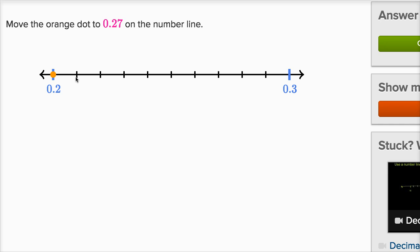So each of these is a tenth of a tenth, which is a hundredth. So this is two tenths and zero hundredths, two tenths and one hundredths, two tenths and two hundredths, two tenths and three hundredths, two tenths and four hundredths, two tenths and five hundredths, two tenths and six hundredths, two tenths and seven hundredths. This is two tenths and seven hundredths. Another way you could view it is, this is twenty hundredths.